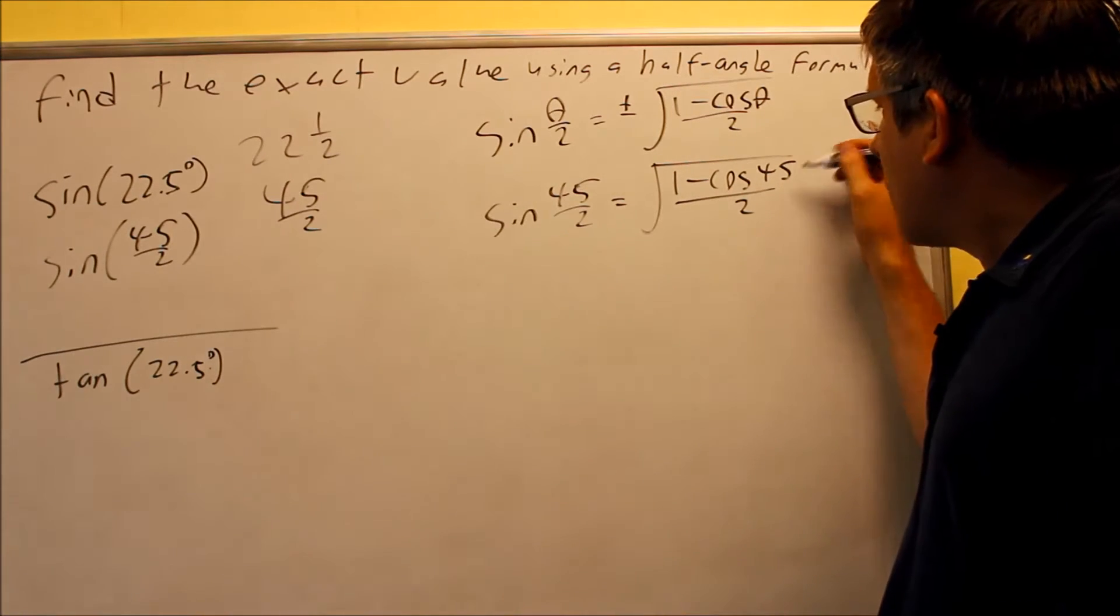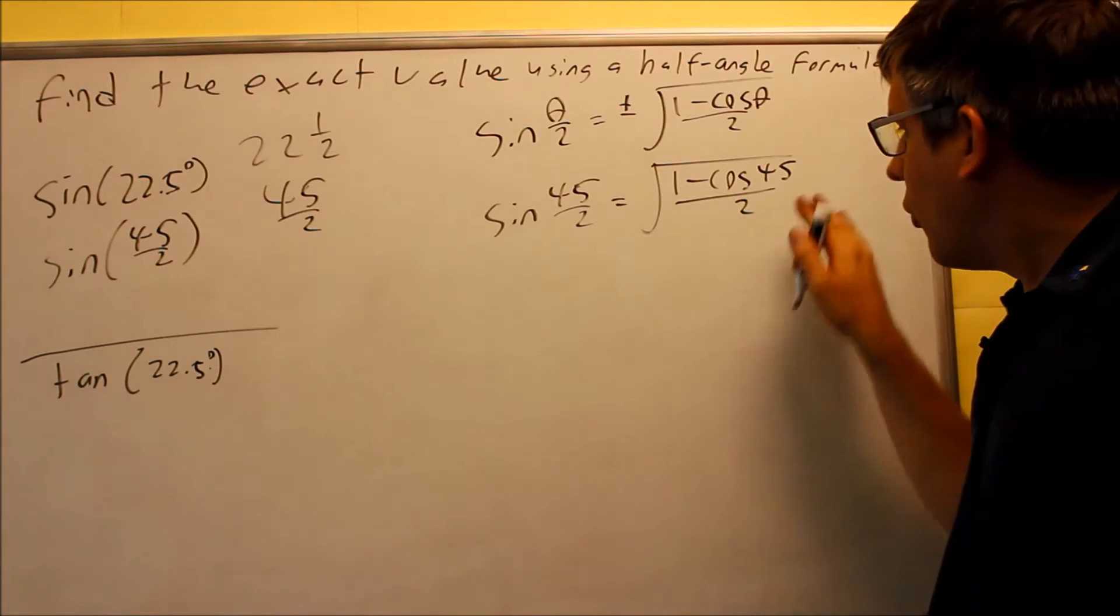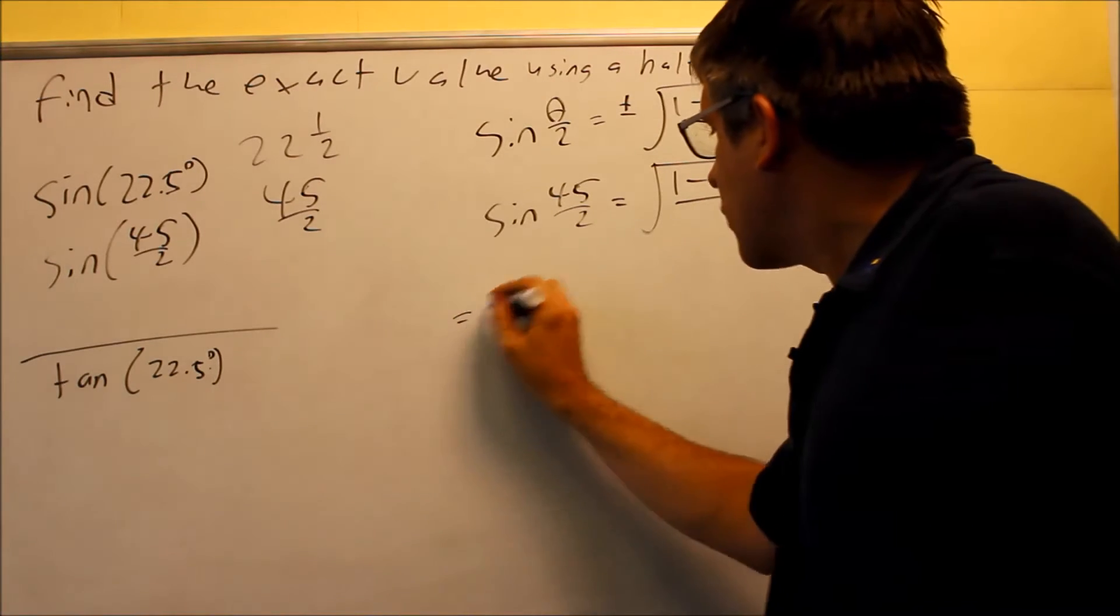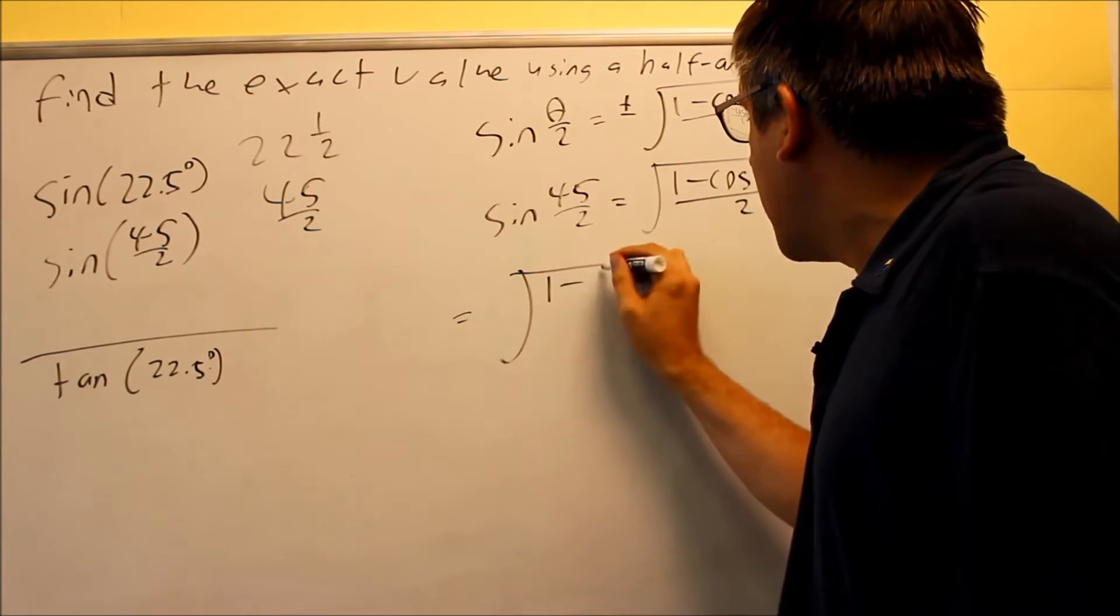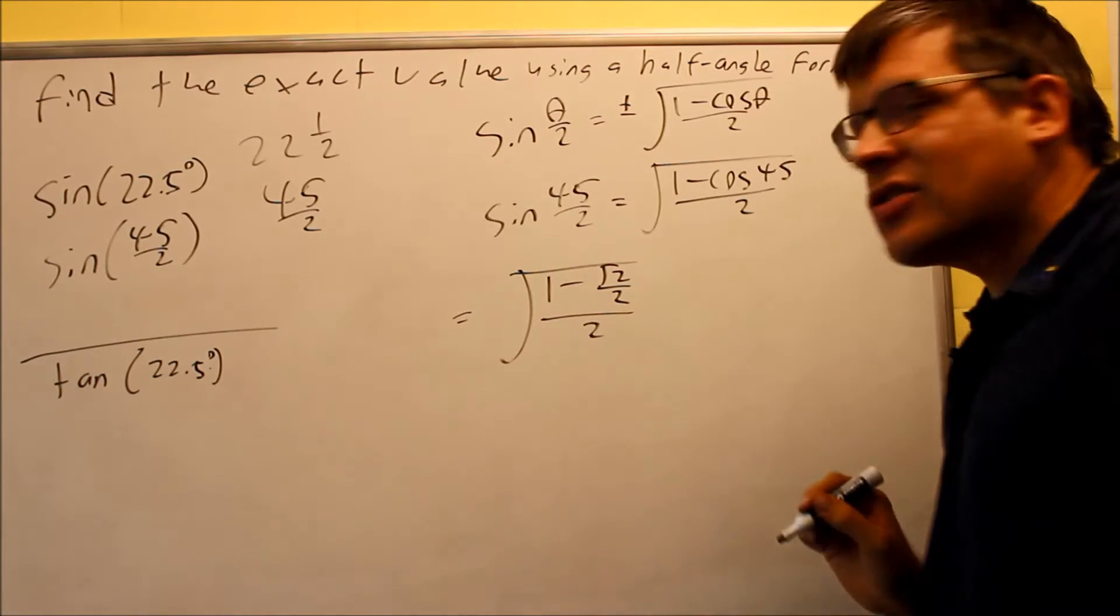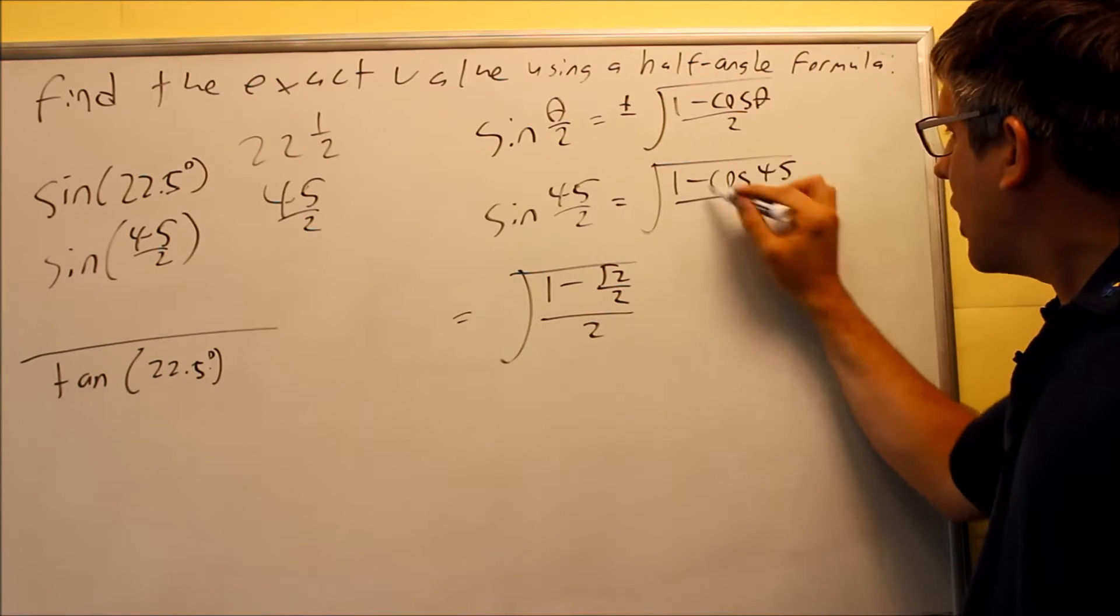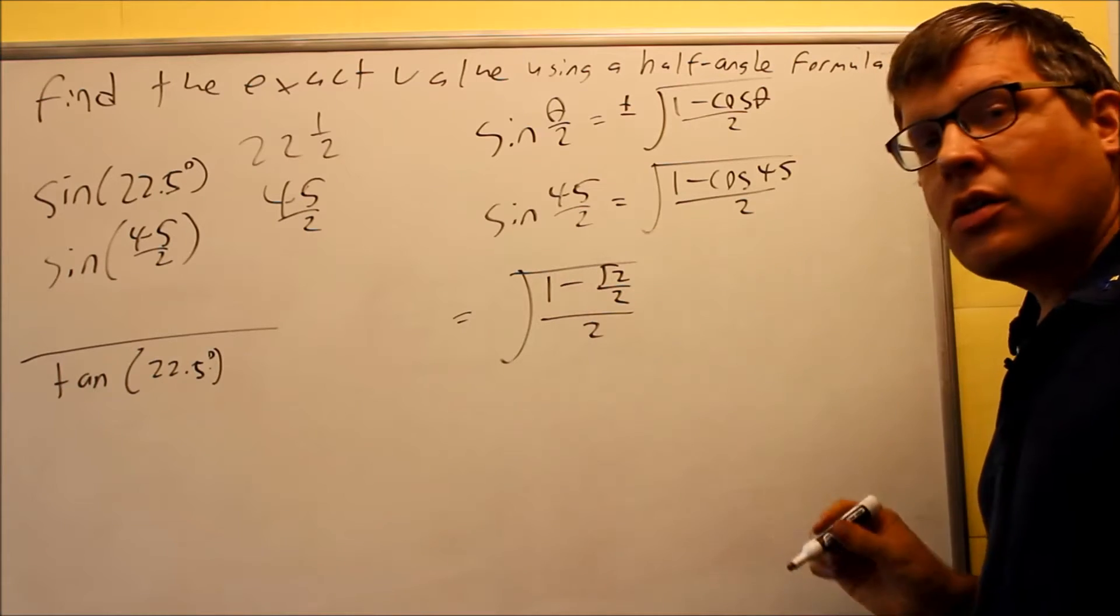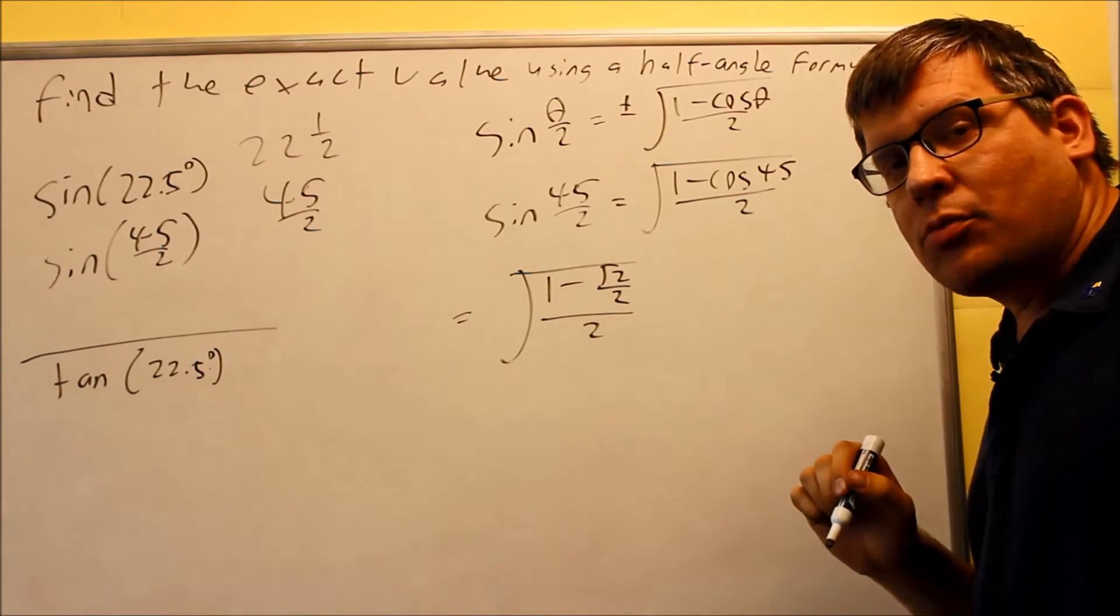Okay, so now that I have this, I need to put in the exact value for cosine 45. So I'm going to go ahead and do that. I have 1 minus square root of 2 over 2, and all that's going to be divided by 2. So this cosine 45, that's the value from the table we had in the previous session.